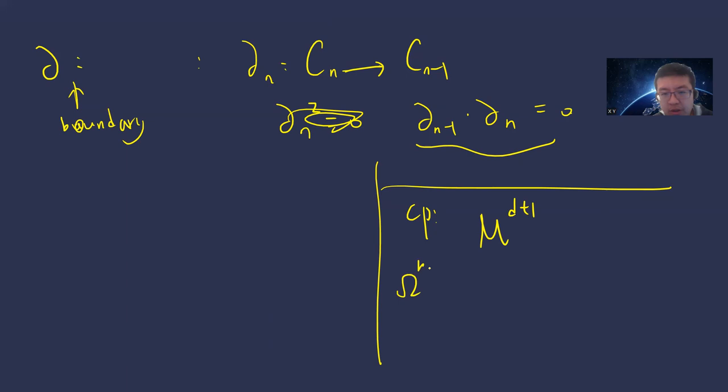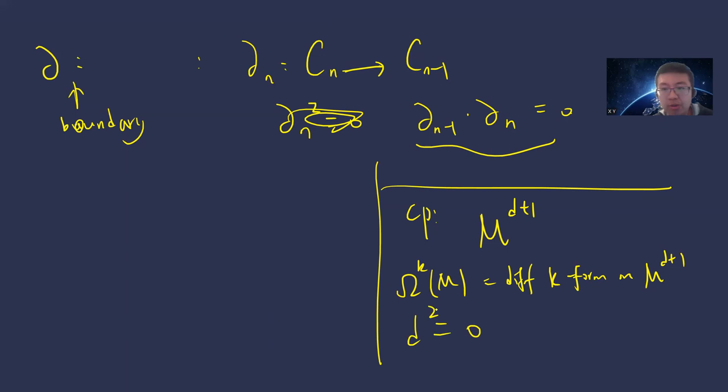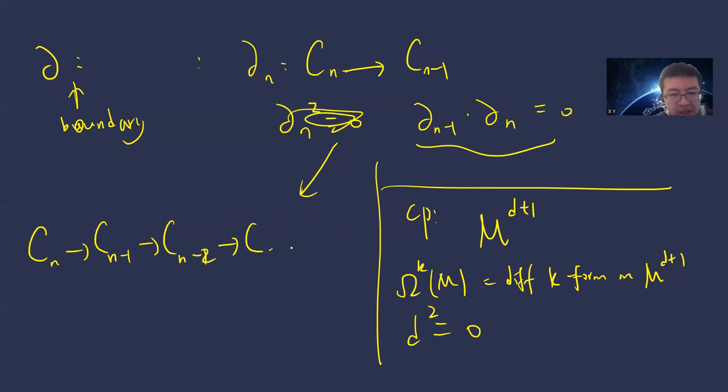Consider a d+1 manifold M and the space Ωᵏ(M) of differential k-forms on M. You can define the exterior derivative d, and you can check that d² = 0 as well. So from here you have a complex — a chain — going to zero with derivatives. These are called singular chains.